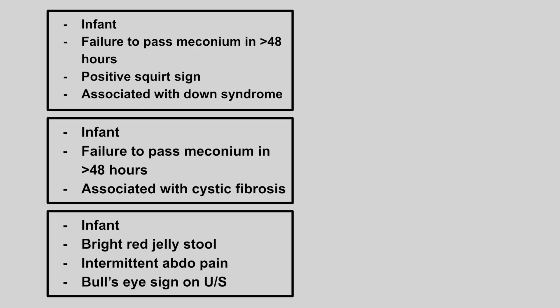The next patient is an infant with failure to pass meconium, a positive squirt sign, and association with Down syndrome — this is Hirschsprung's disease. The ganglion cells are not able to migrate the full length of the colon, so these babies can't have their first bowel movement on time. The squirt sign occurs when you do a digital rectal exam and all the feces explode outwards. There will be a very dilated colon followed by a very thin segment.